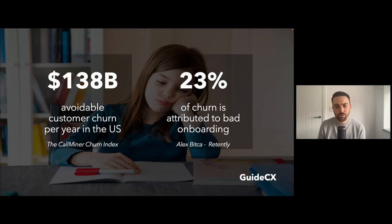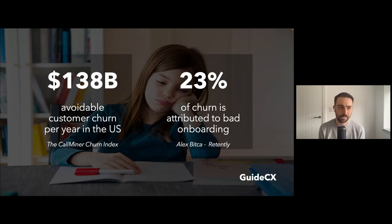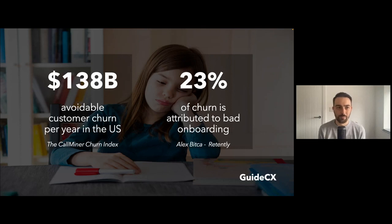A big thanks to some friends of mine over at GuideCX who have provided me with some stats here. $138 billion is actually lost in avoidable churn per year in the US alone. And 23% of churn is attributed to bad onboarding. That is a huge statistic — 23% of churn is attributed to bad onboarding.